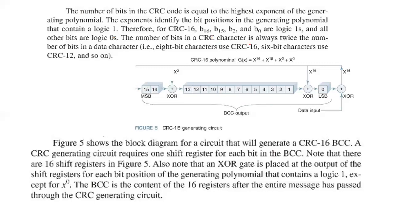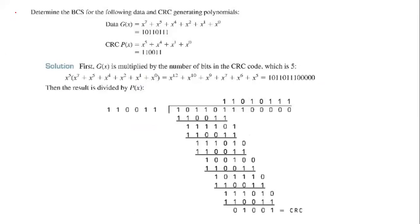The number of bits in a CRC character is always twice the number of bits in a data character. Figure 5 shows the block diagram of a circuit that will generate a CRC-16 BCC. A CRC generating circuit requires one shift register for each bit in the BCC. Note that there are 16 shift registers in figure 11. Also note that the XOR gate is placed at the output of the shift registers for each bit position of the generating polynomial that contains logic 1, except X raised to 0. The BCC content is the content of 16 registers after the entire message has passed through the CRC generating circuit.